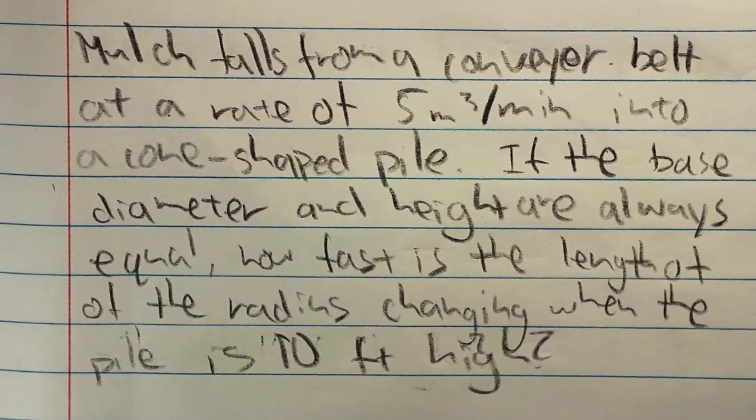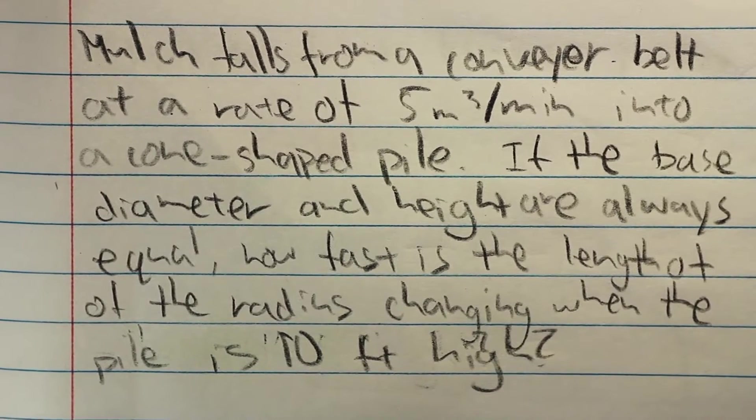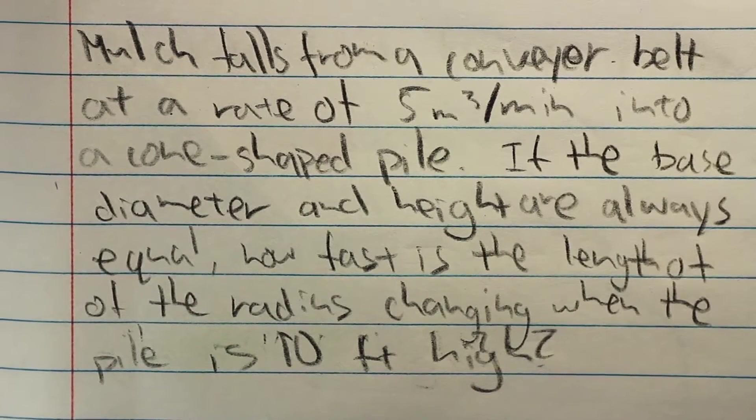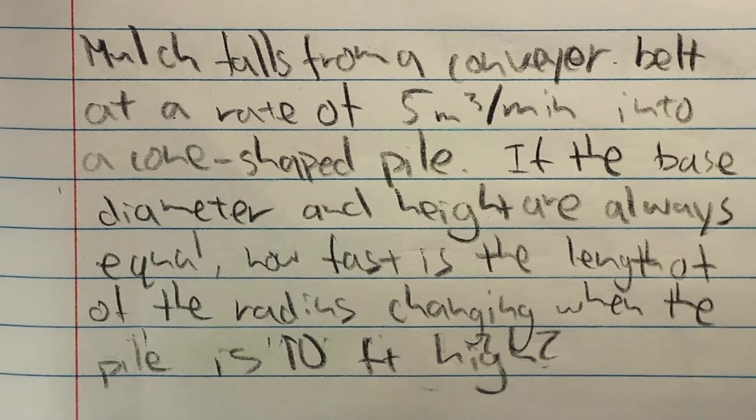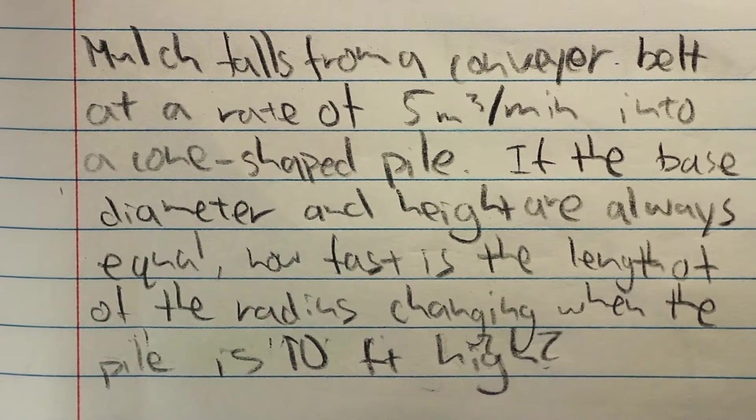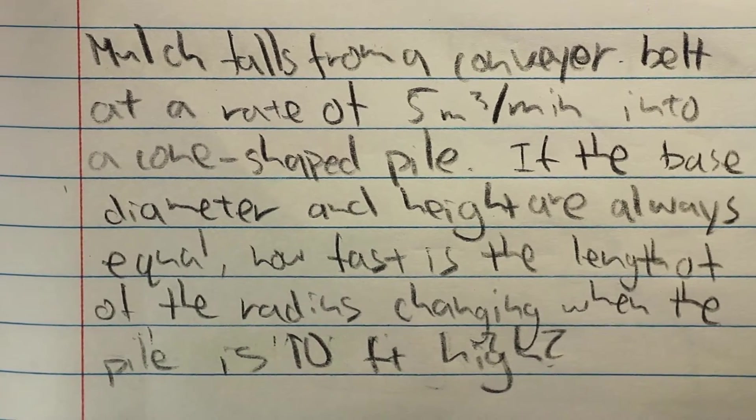So, in this related rates problem, mulch is falling from a conveyor belt at a rate of 5 m³ per minute into a cone-shaped pile. If the base diameter and height are always equal to each other, meaning a 1 to 1 ratio, how fast is the length of the radius changing when the pile of mulch is 10 feet high?